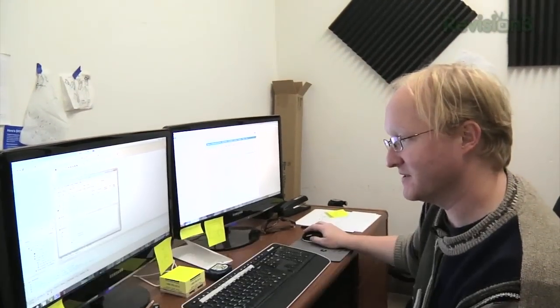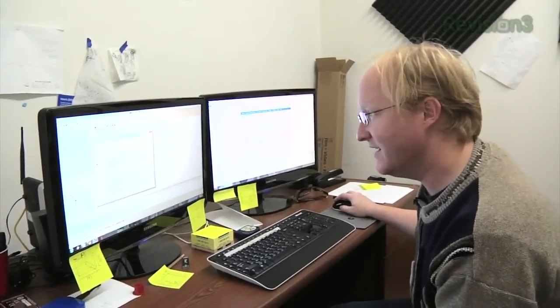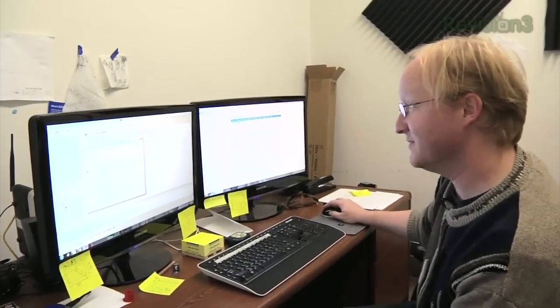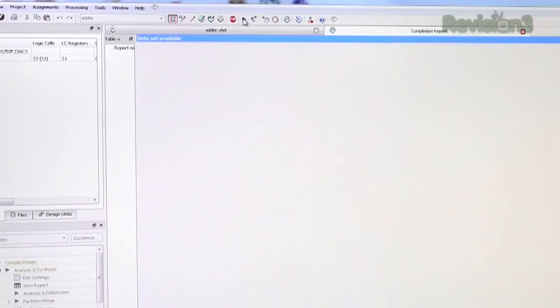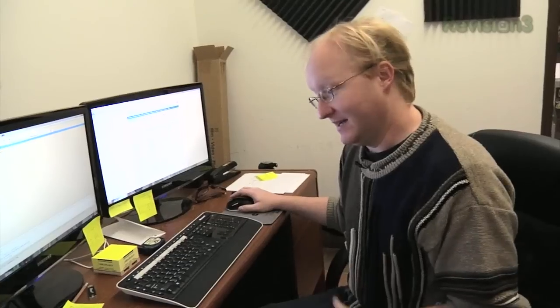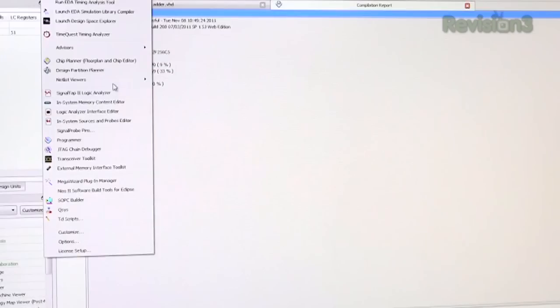There we go. This is a Max 5. Its specific name is 5M570ZF256. At your service, sir, protocol droid. All right. So we're going to do this and see if it compiles correctly. Now that it's been compiled, let's take a look at the logic itself before we actually do the physical example. You know, the netless viewers, RTL viewer.